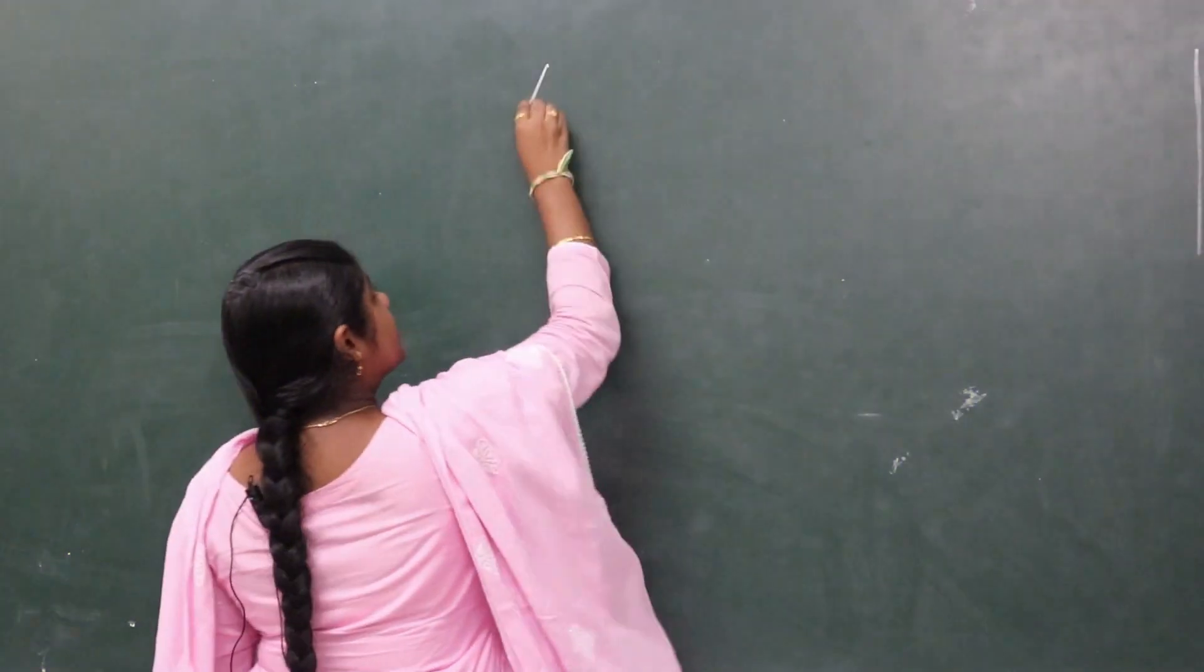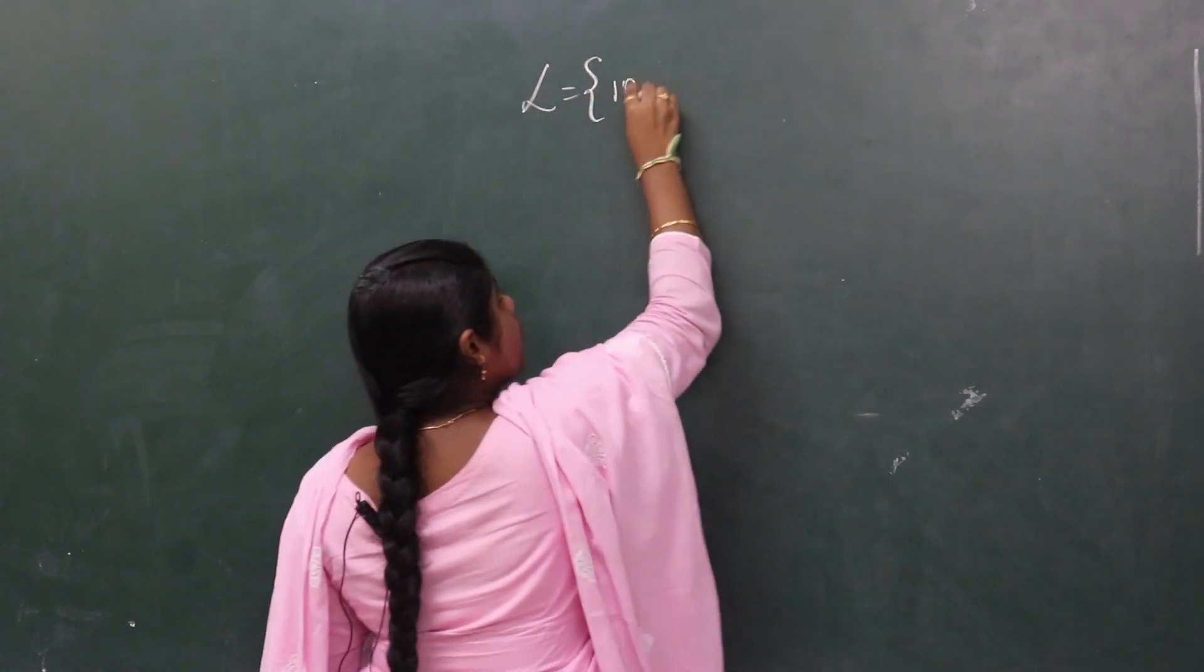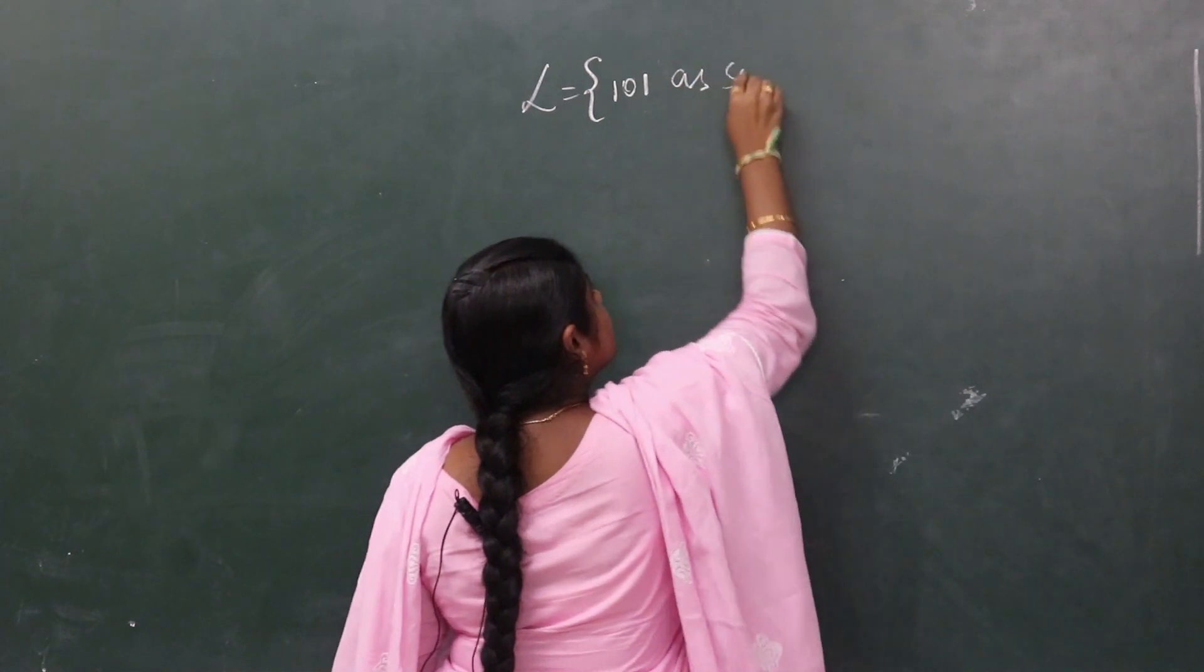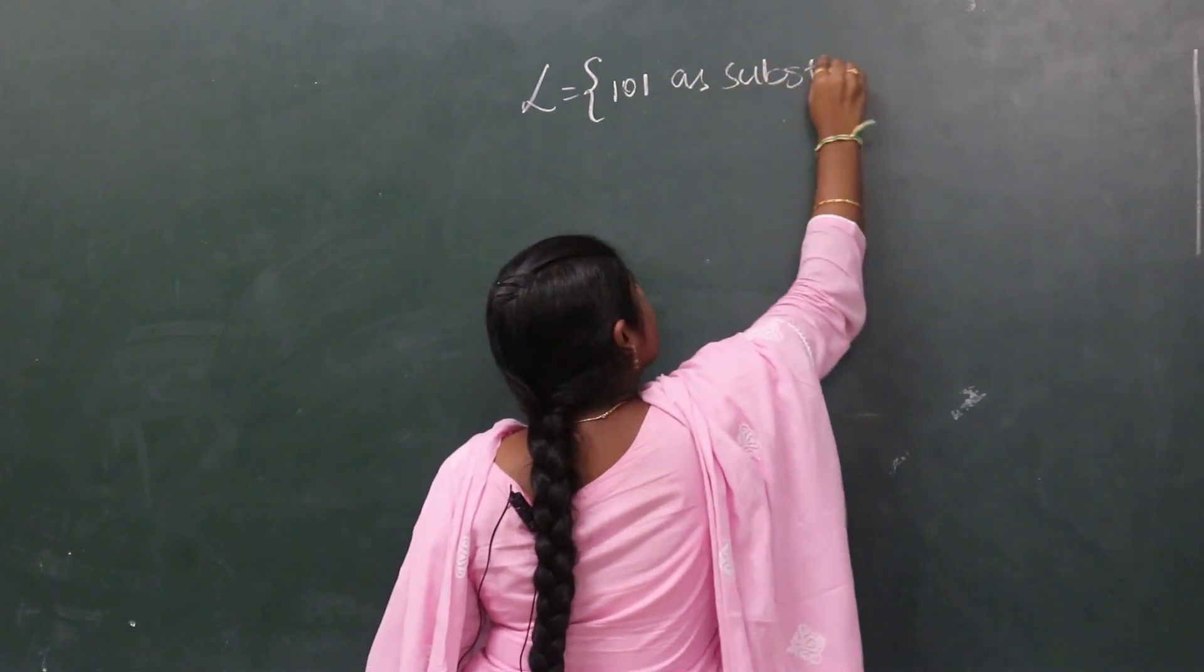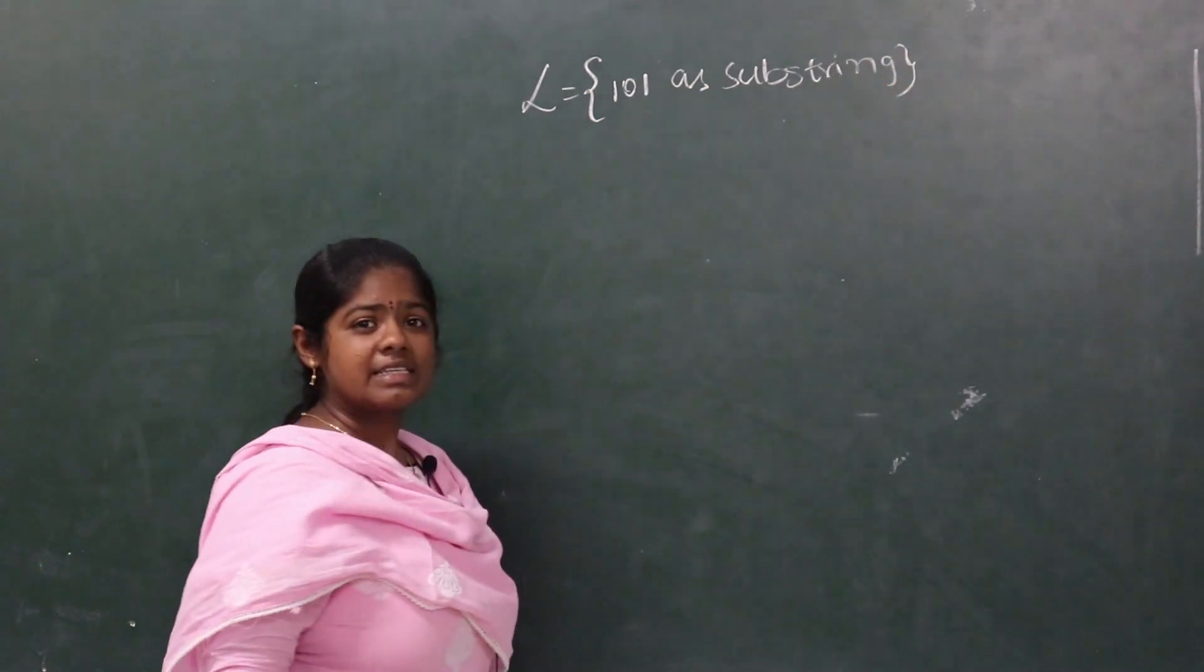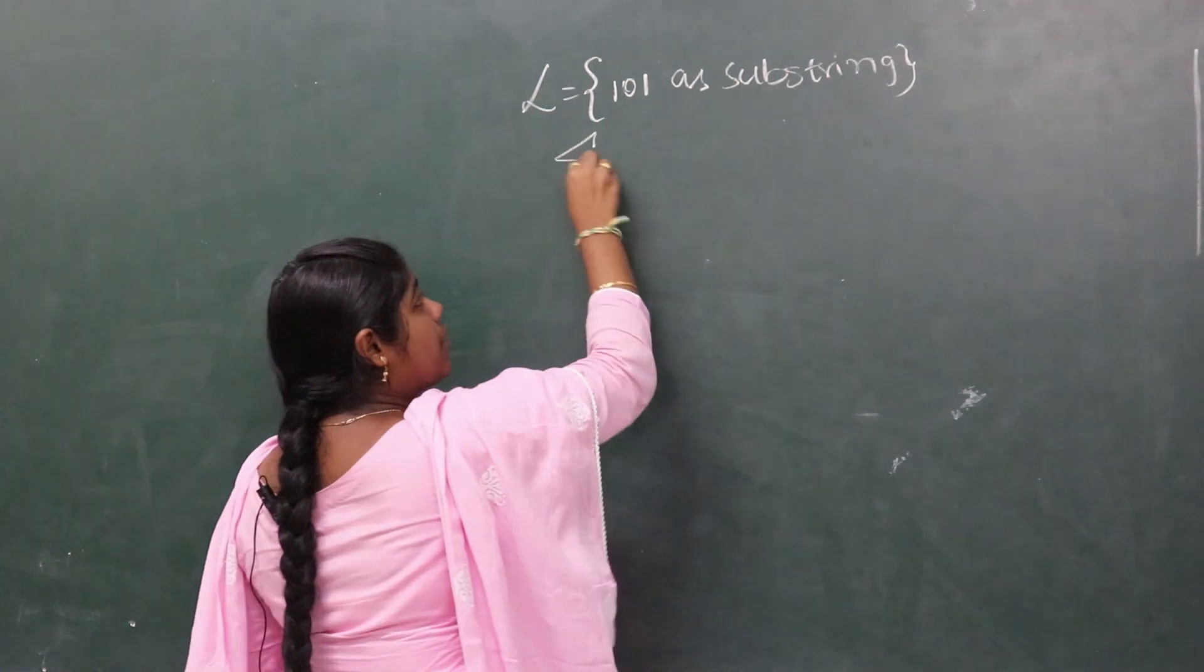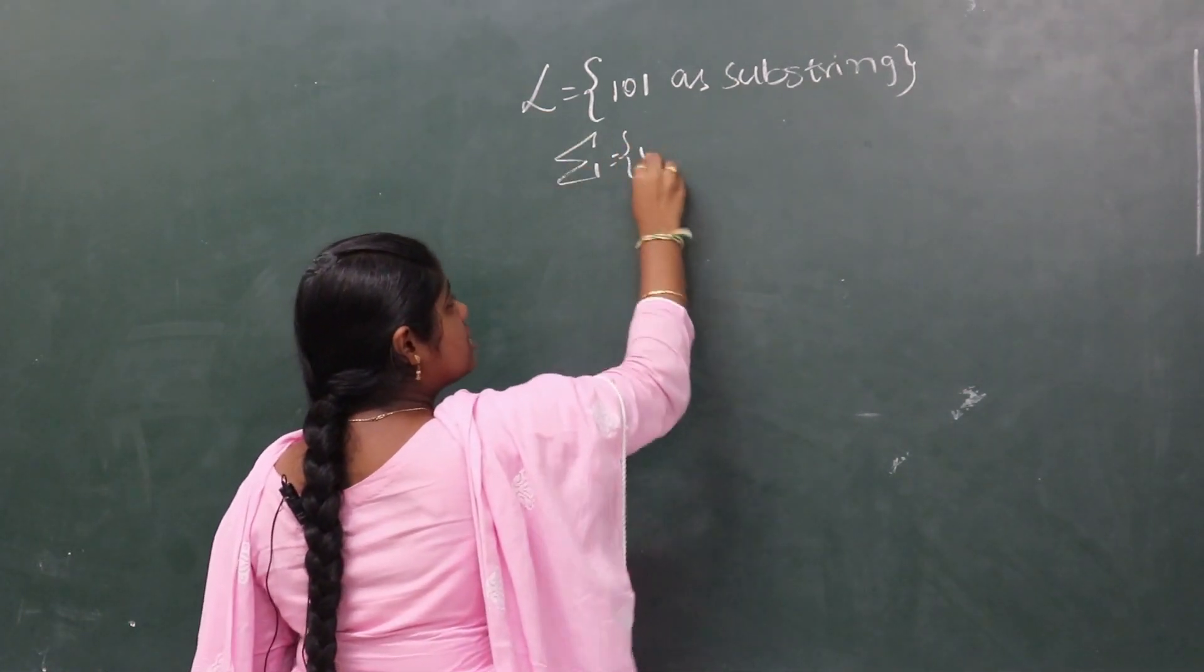Let us consider a language which accepts 101 as substring. The input alphabet set over this language is 0,1.